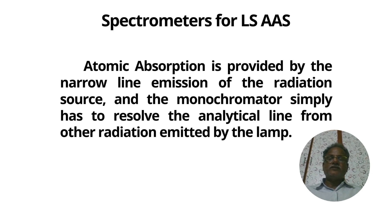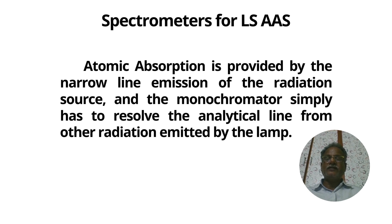The spectrometers for line-source atomic absorption spectroscopy are provided with a narrow line emission of the radiation source, passing between 0.2 and 2 nanometers — that is, a low-resolution monochromator. A monochromator filters the radiation at a desired wavelength from polychromatic radiation.